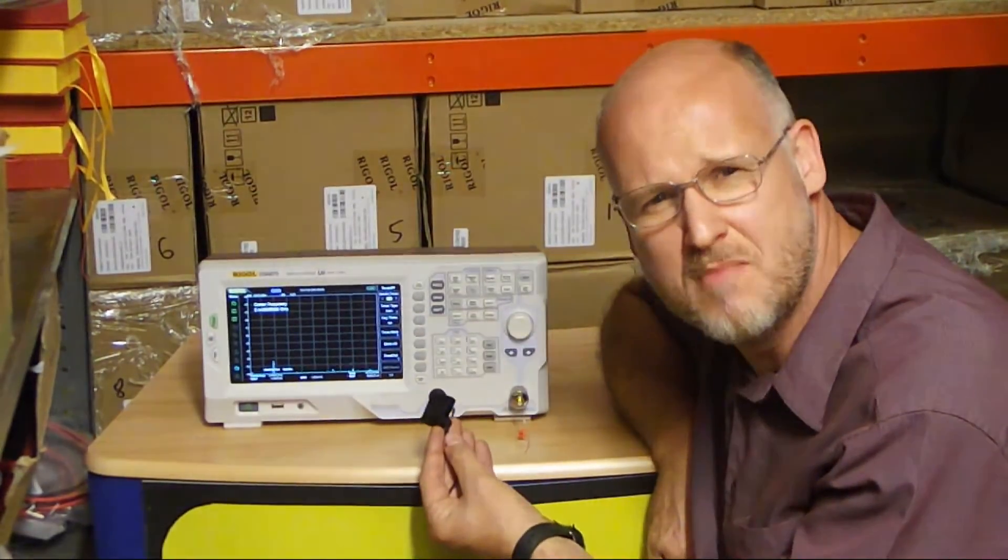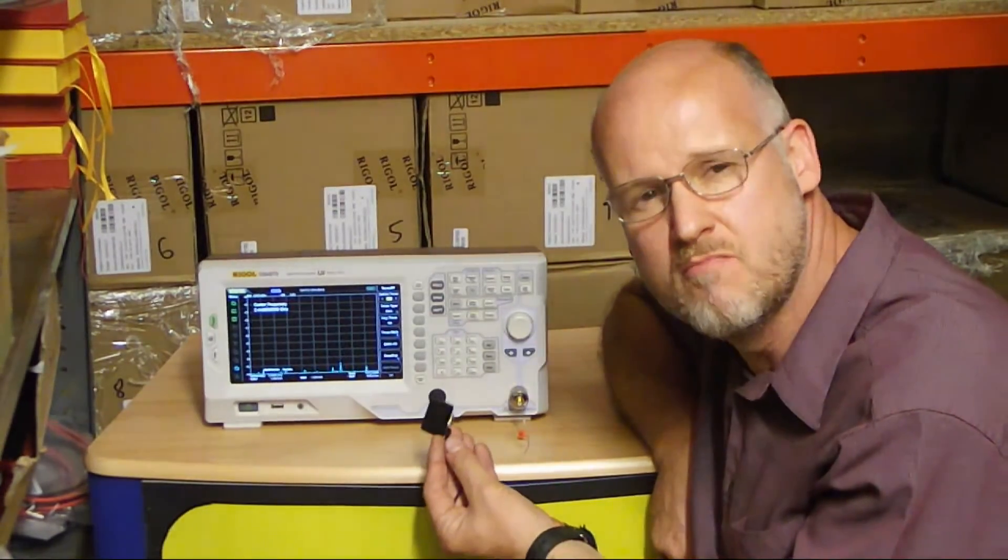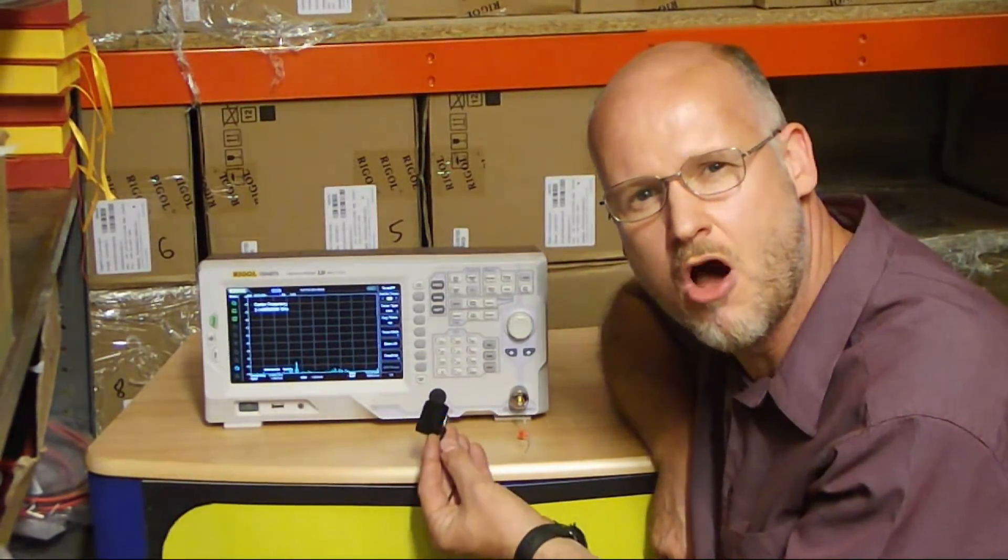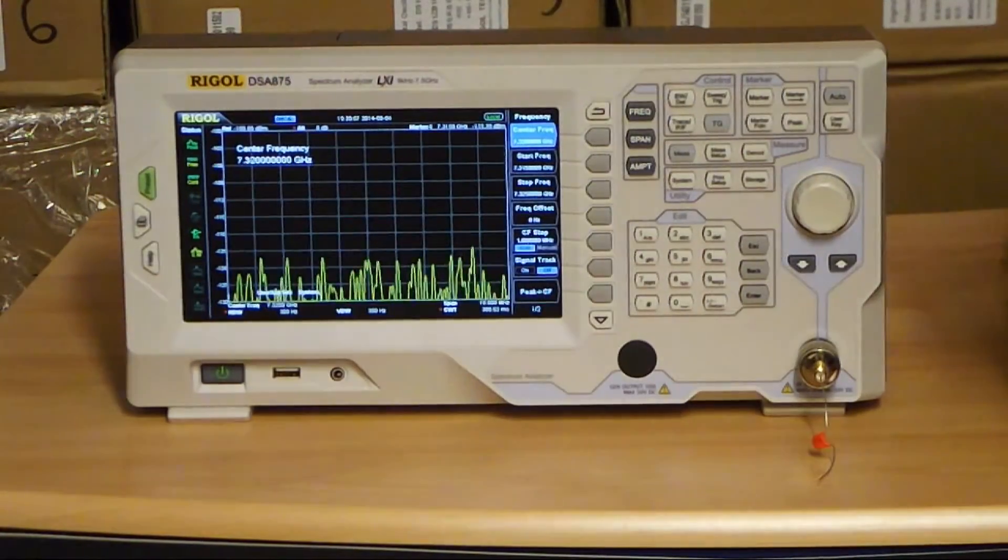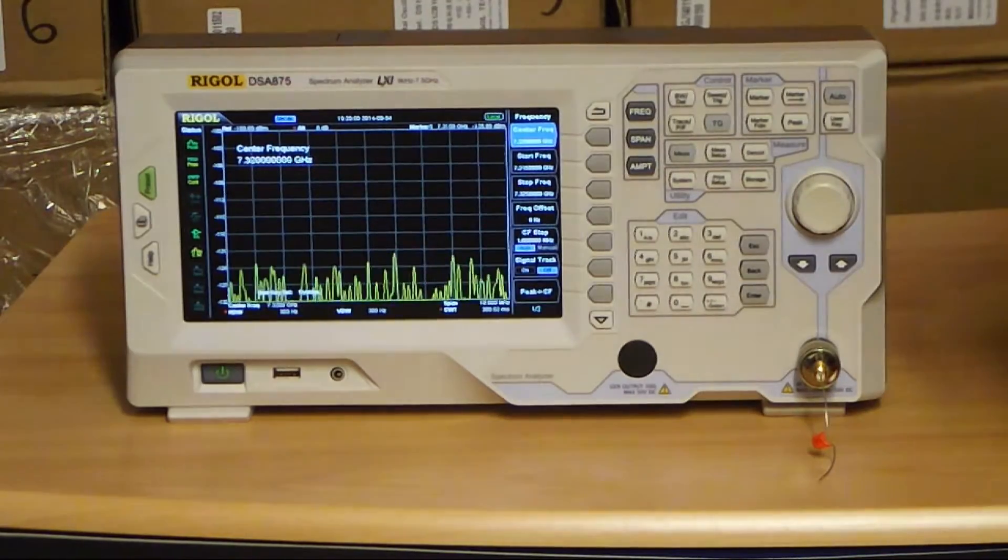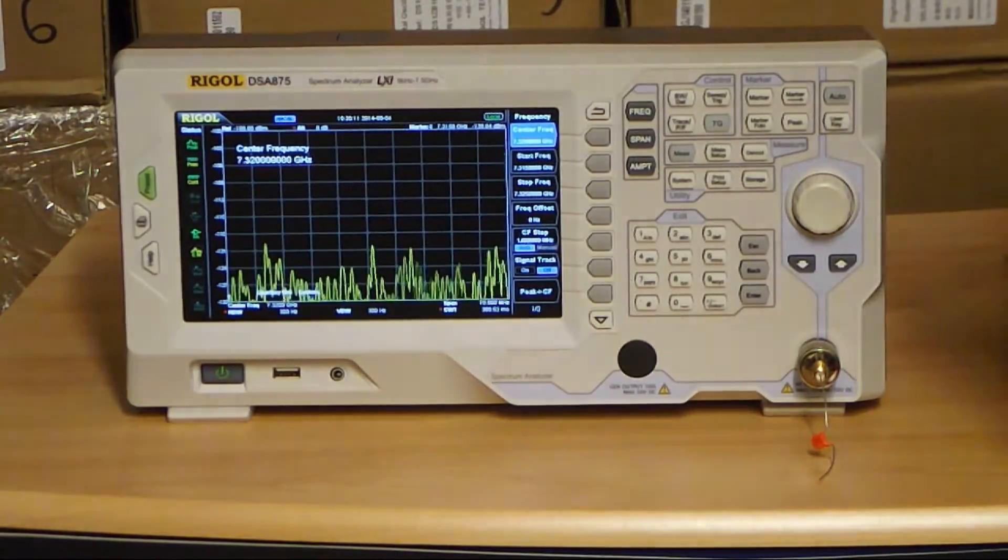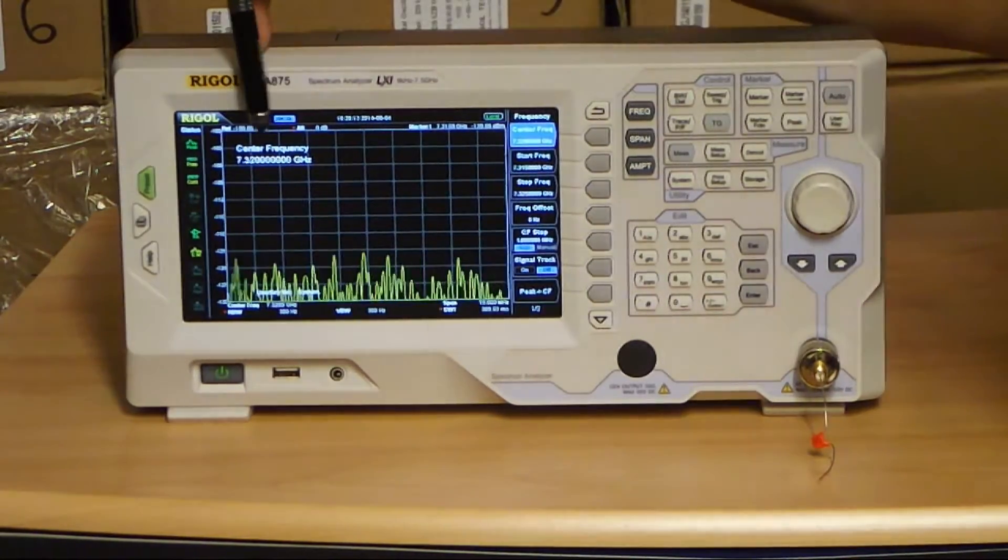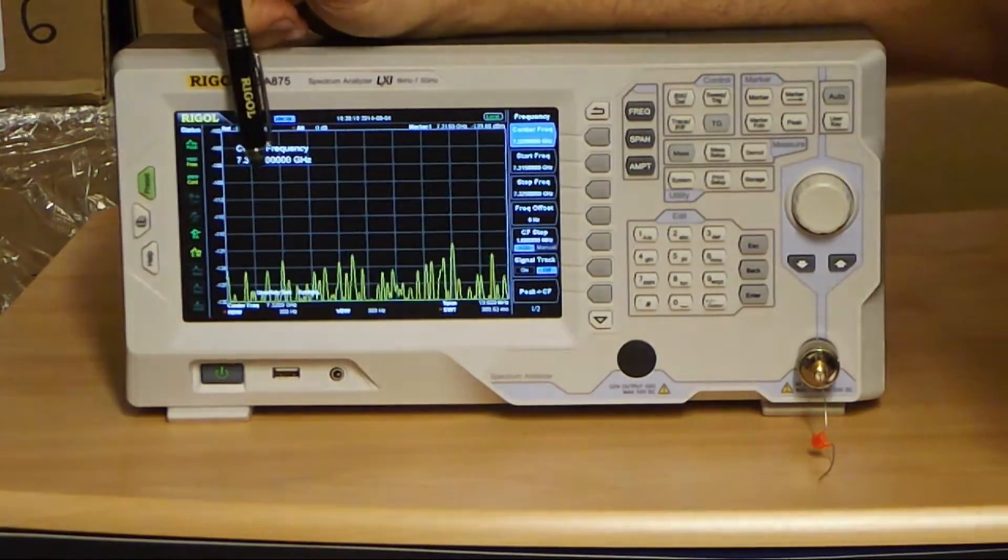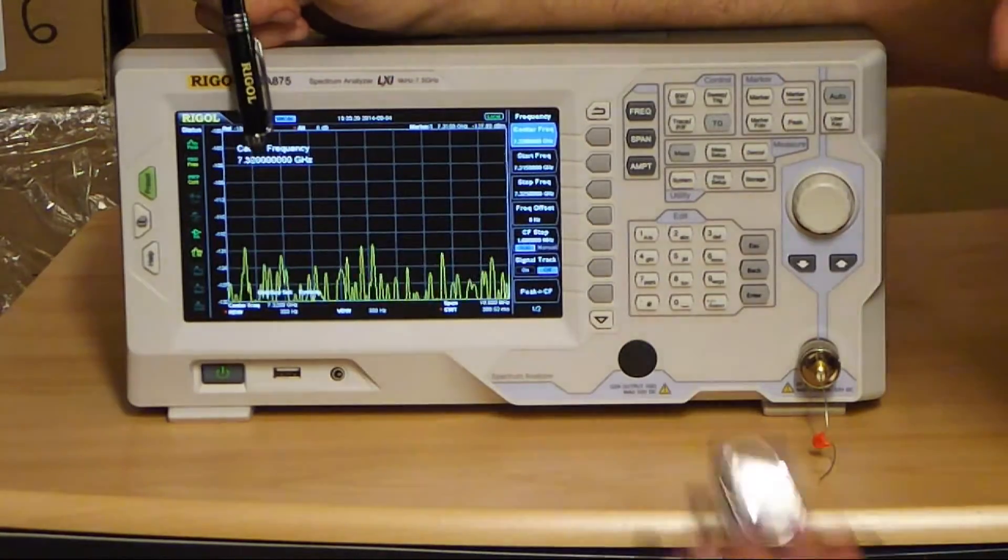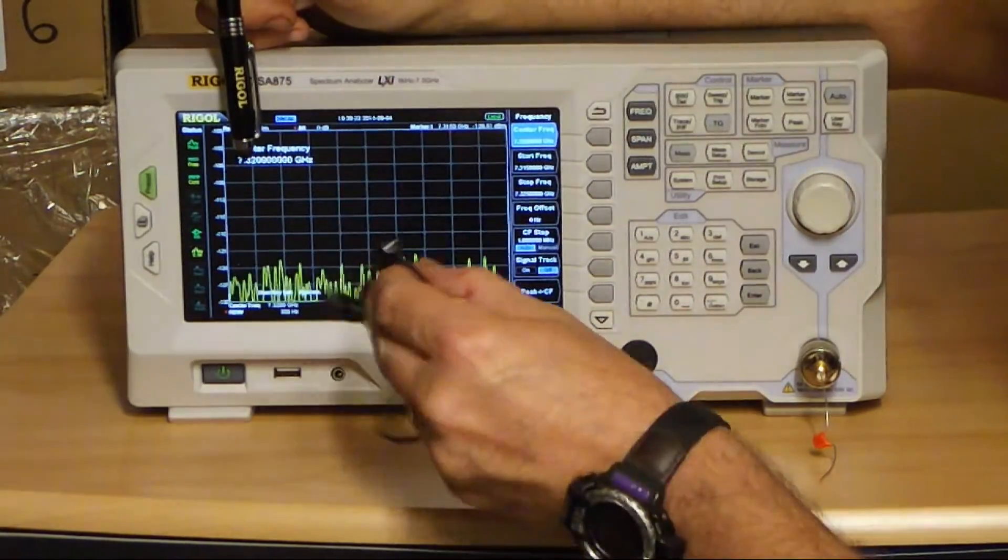Now let's zoom in and have a look at what happens at 7.32 GHz at the third harmonic frequency. So this is the most difficult part of the test. I've honed in on the third harmonic frequency of 7.32 GHz. That's three times the 2.44 GHz frequency of the fundamental of my little Bluetooth gadget.